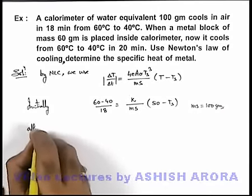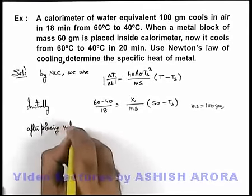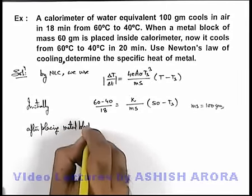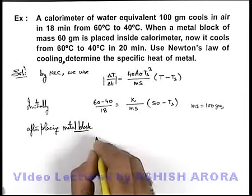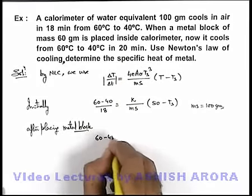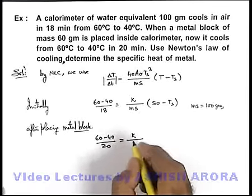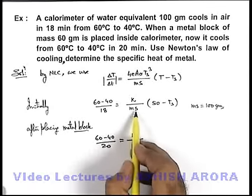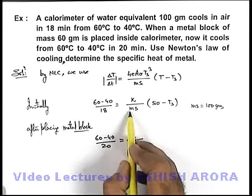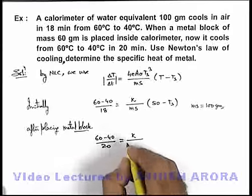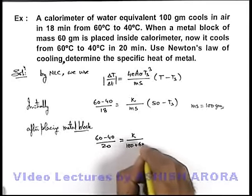After placing metal block, it is given that it takes 20 minutes to cool from 60 to 40, so the equation will become (60 - 40) by 20 is equal to k by - obviously if a metal block is placed, and it is given that the mass of block is 60 grams, so we can simply write it ms which is 100 plus 60s.